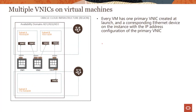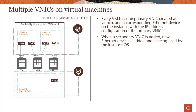Every VM has one primary VNIC, which is created when you launch the instance. As and when you add a secondary VNIC, a new ethernet device is added and recognized by the instance operating system. As you can see in this graphic, VM1 has only a single primary VNIC — VNIC1 — living in Subnet A.